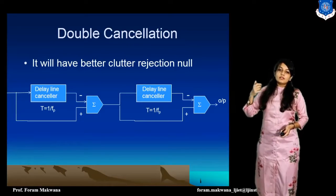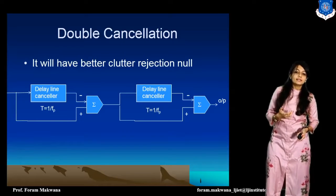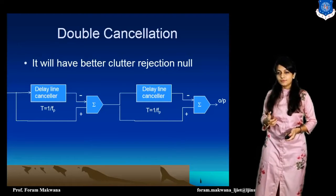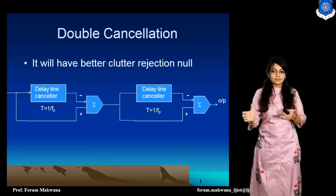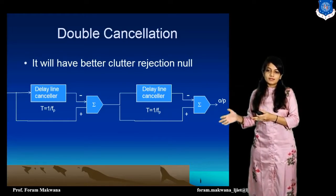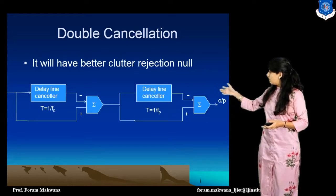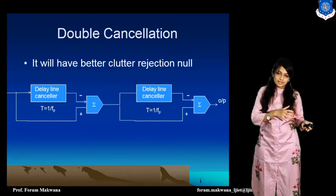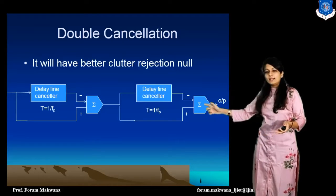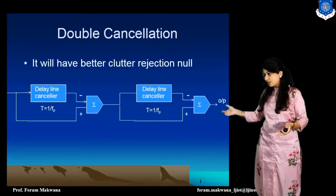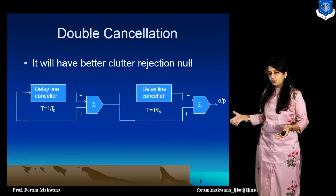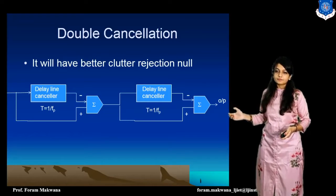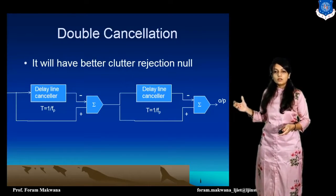If we want a better kind of clutter rejection, we are going to use a delay line canceller for two stages. First, the signal is delayed and the original signal is applied to a subtractor. Again, that signal is applied to the subtractor circuit, then to the line canceller, delayed again, and applied to another subtractor circuit. Finally, we get an output which has better clutter rejection. This is called double cancellation.